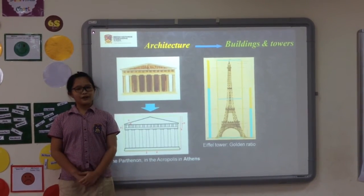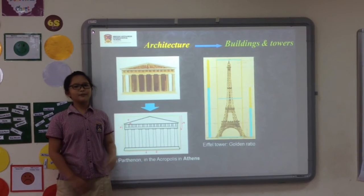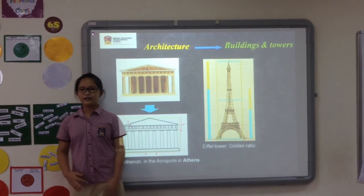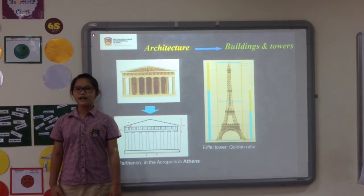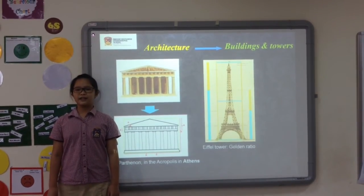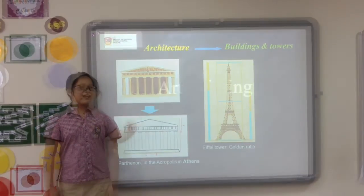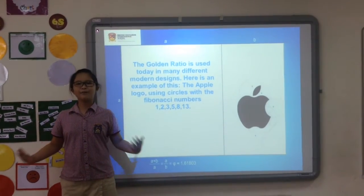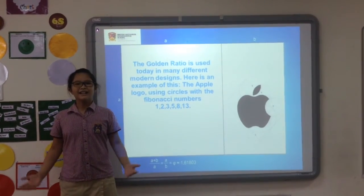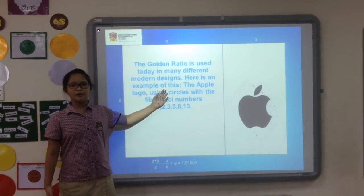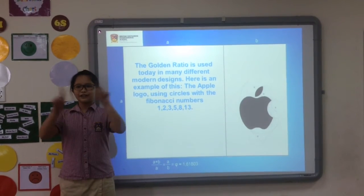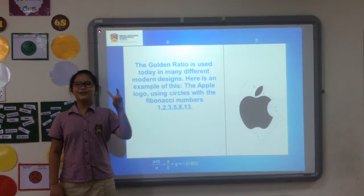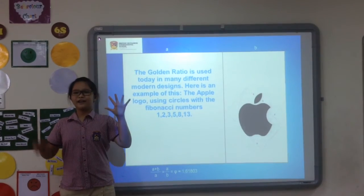Using the golden proportion, we can follow the proportions of nature. In architecture and art, it became an important principle in the design of art and architecture during the Renaissance. In art and painting, the golden ratio is used today in many modern designs. Here is the Apple logo — it is designed using circles with Pubernesti numbers: 1, 2, 3, 5, 8, and 13.